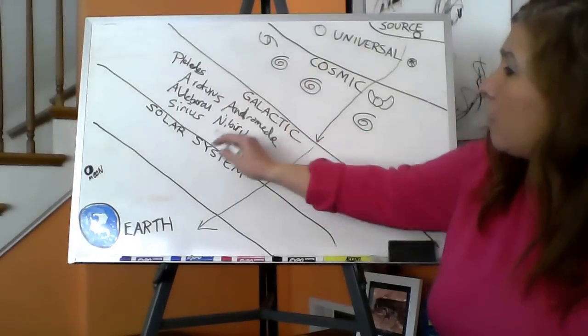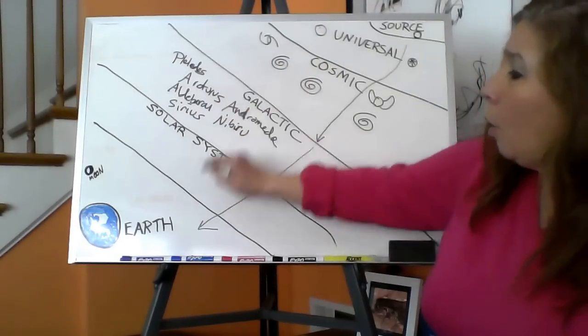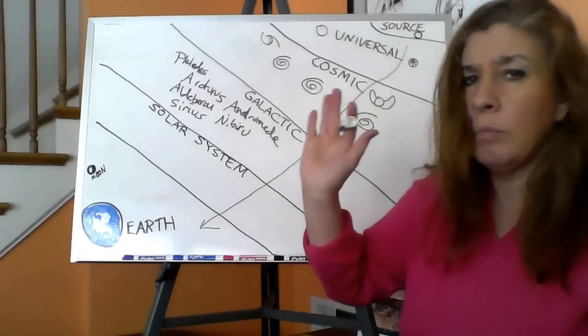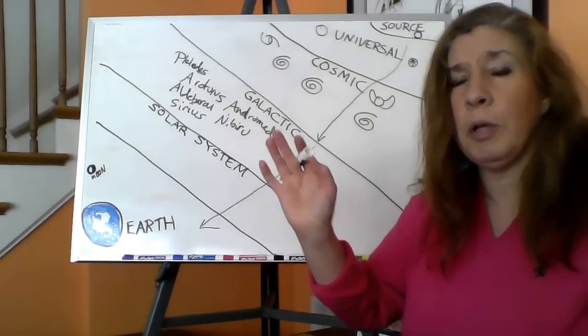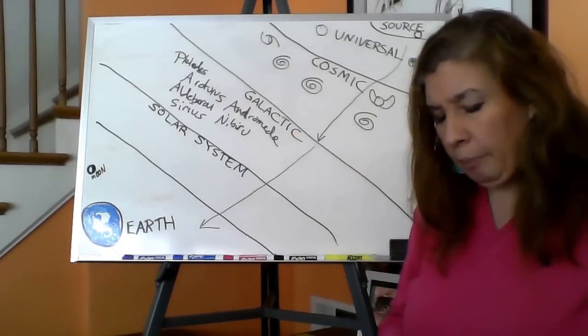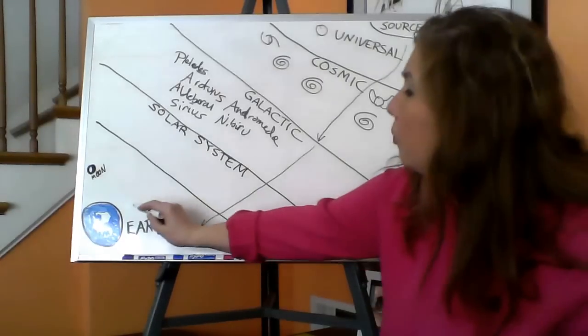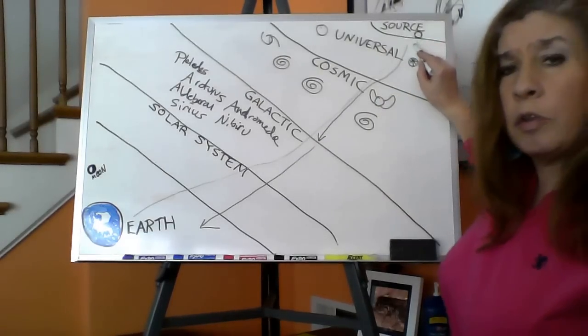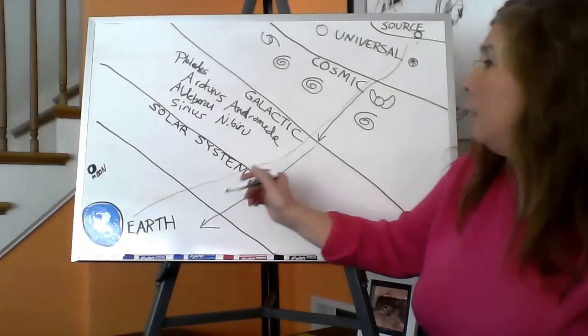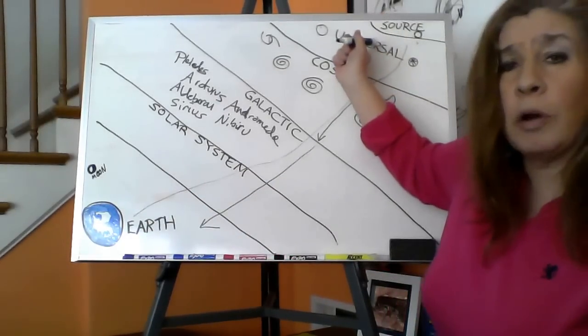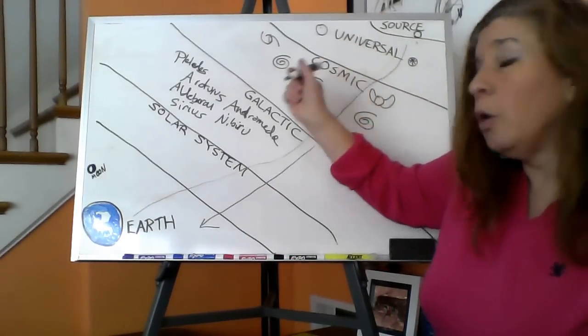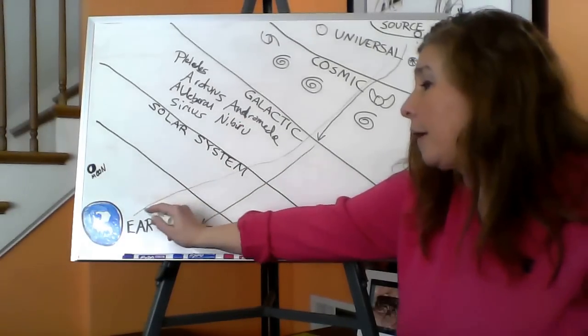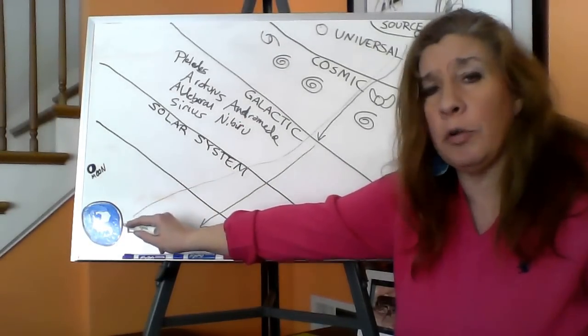Earth was damaged at some point, going back almost three billion years. The grid that fuels Earth, that is Earth's life source, was damaged. Some of us source beings were the actual ones who were in many ways terraformers and co-creators that came to repair the Earth grid.